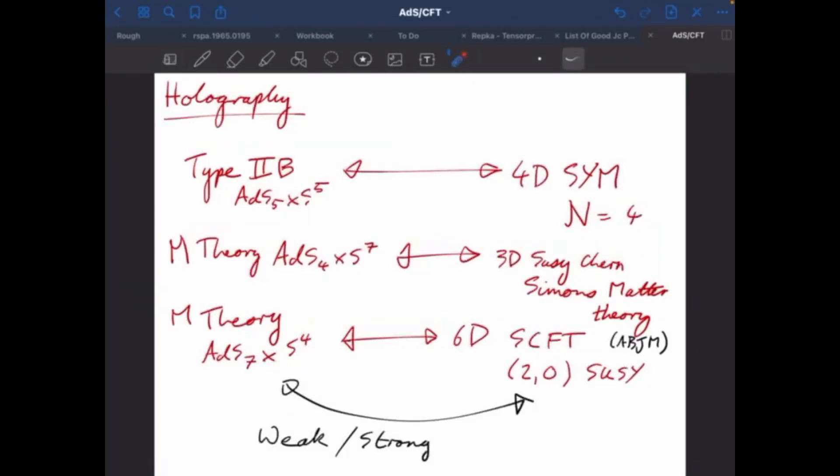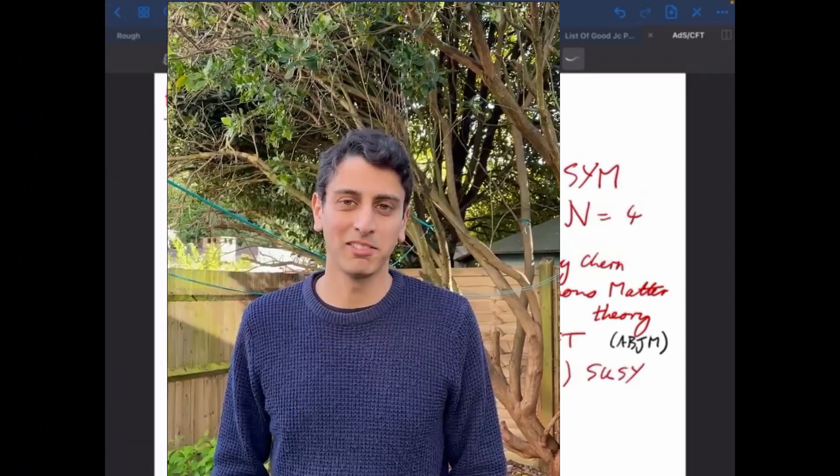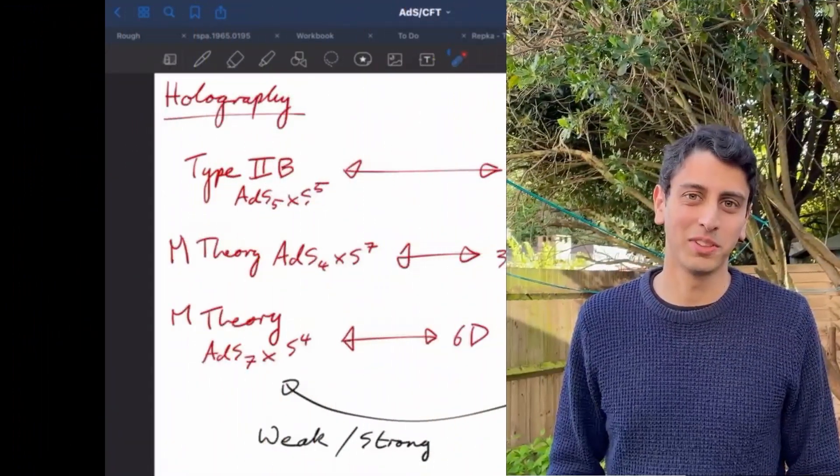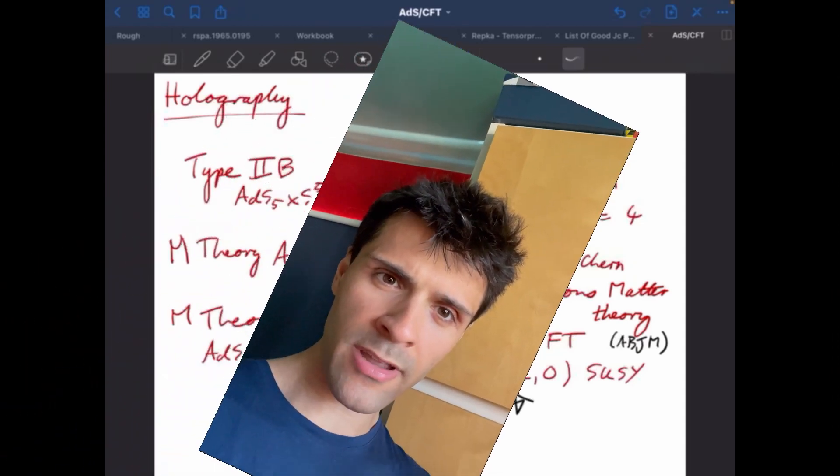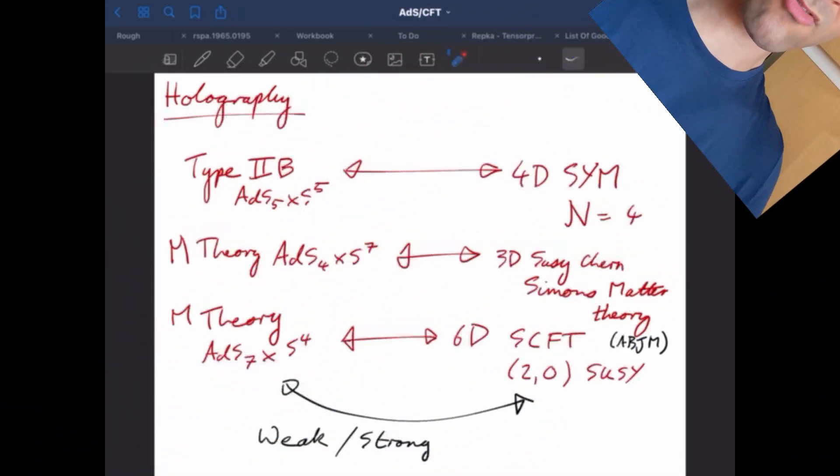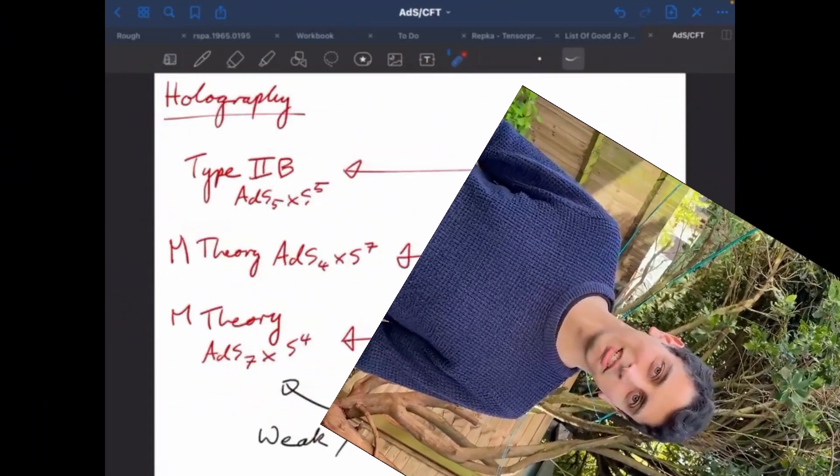The ADS-CFT duality. Anti-de-Sitter space is a maximally symmetric solution to Einstein's equations with a negative cosmological constant. ADS is like a Pringle, but not really. ...of the holographic principle, the ADS-CFT correspondence.